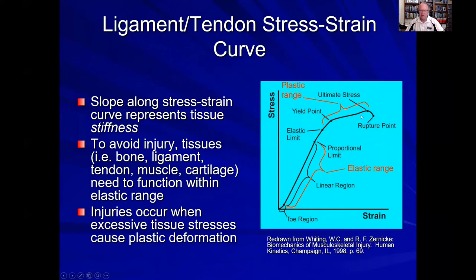When injuries involve too high loads or too high a stress — such as in that Achilles tendon rupture we saw earlier — that is when the stress goes too high, we start getting a yield of that material, and even a complete rupture can occur.